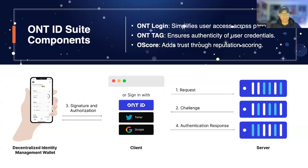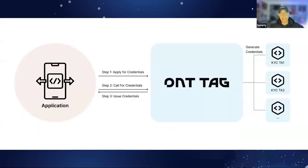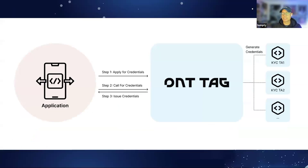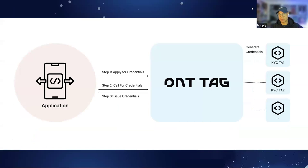I won't get too deep in technical details because this is where Dr. Mao or Kendall shines. But from an application level, you can, through Ontology's Trust Anchor Gateway, apply for these credentials, call for them and issue them — basically verify these identities with OntiD, OntLogin, and the suite of products.